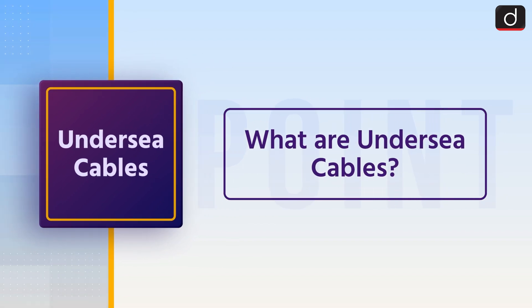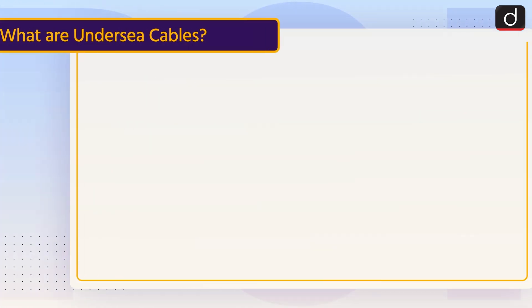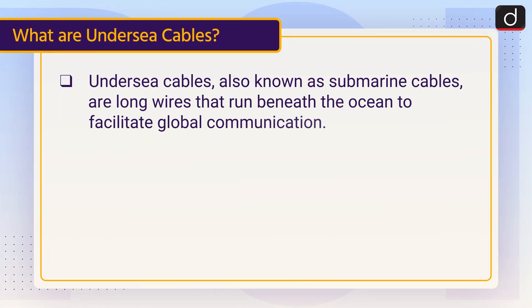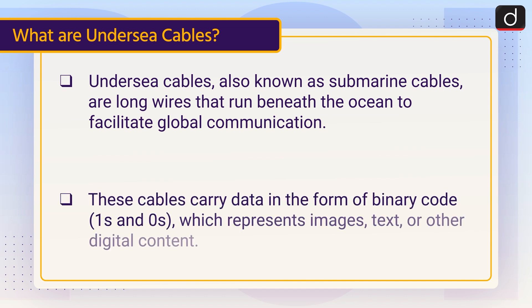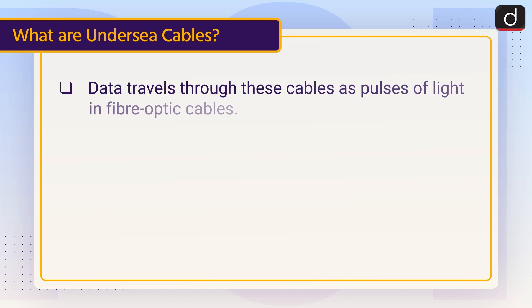Now let's discuss what are undersea cables. Undersea cables, also known as submarine cables, are long wires that run beneath the ocean to facilitate global communication. These cables carry data in the form of binary code, which represents images, text or other digital content. Data travels through these cables as pulses of light in fibre optic cables.